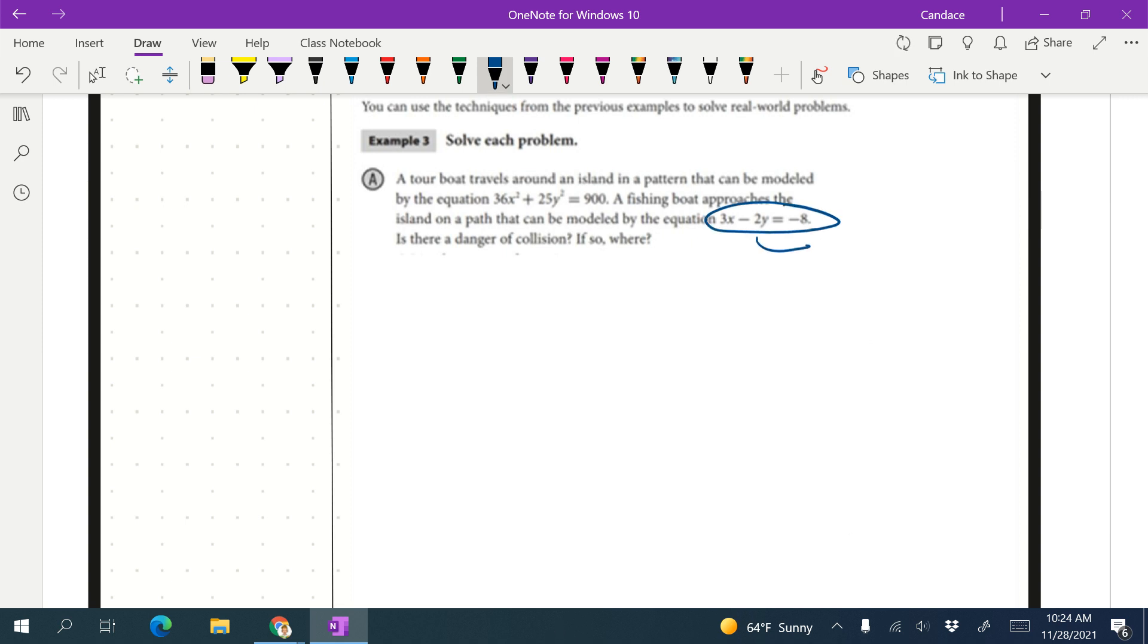So I'm going to start by moving the y to the other side. So we've got 3x equals 2y minus 8. Then I'm going to divide both sides by 3. So x equals 2y minus 8 over 3. It's ugly.